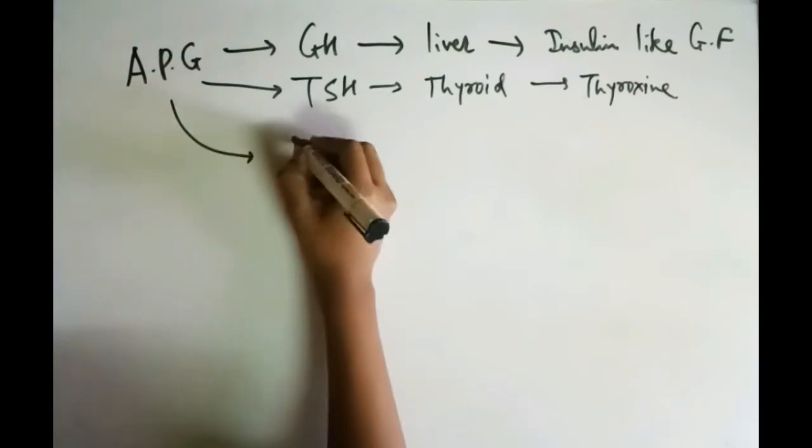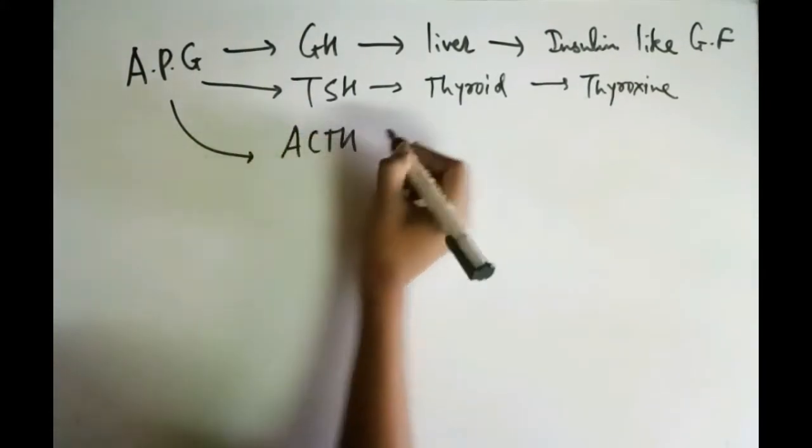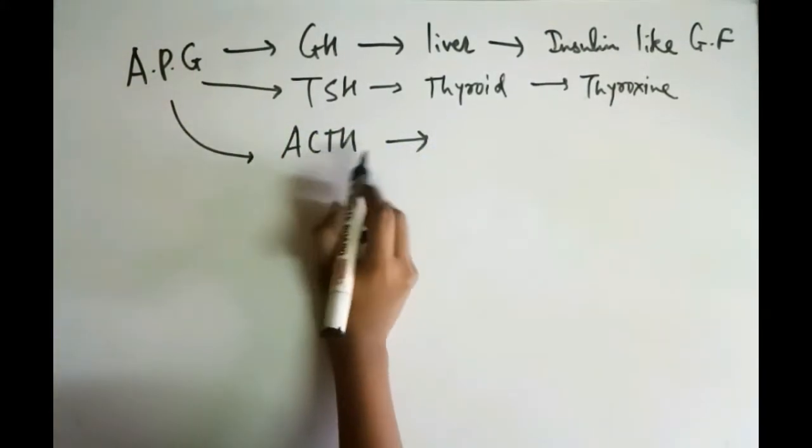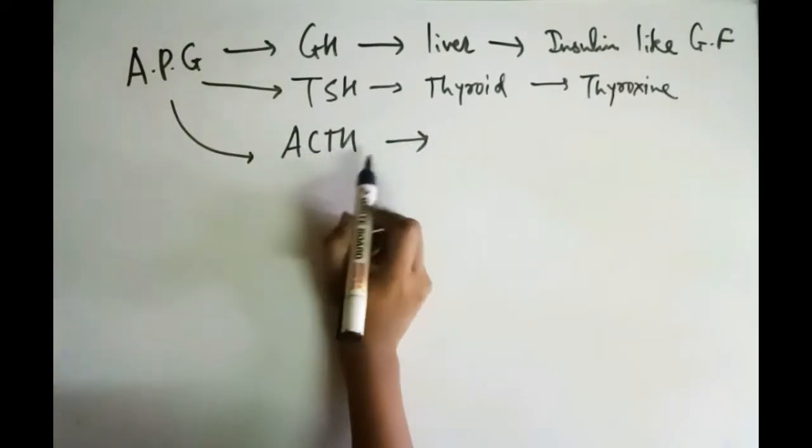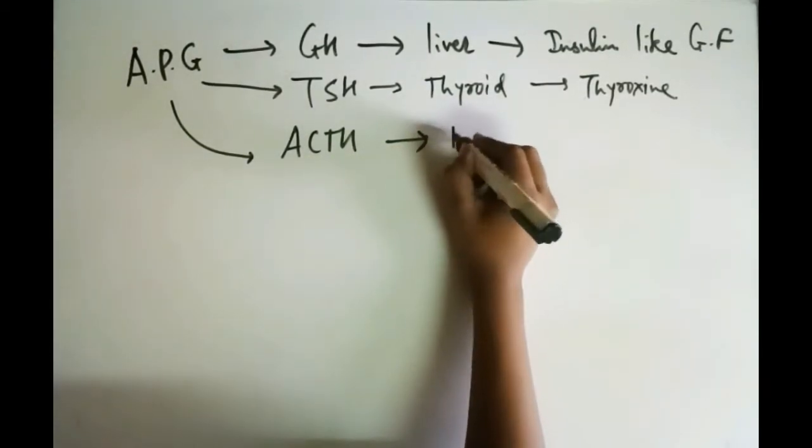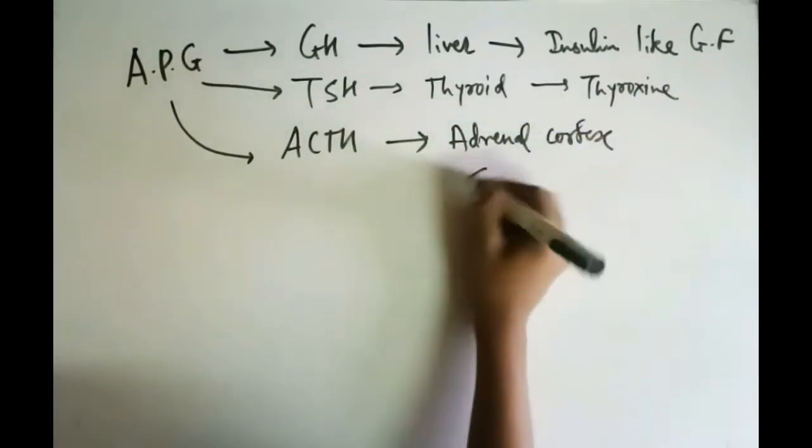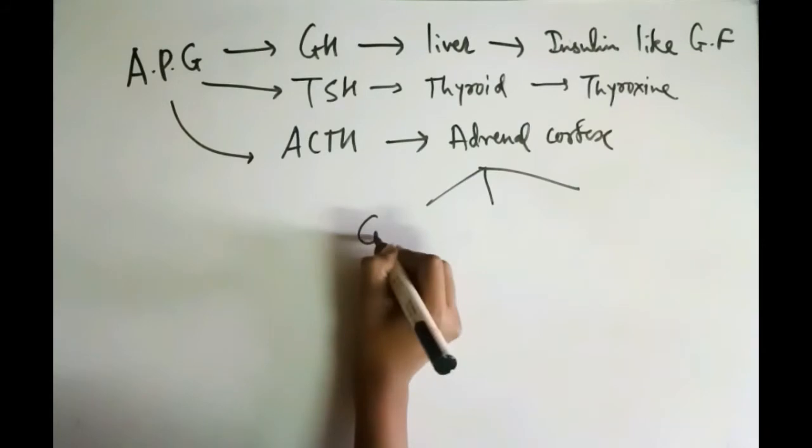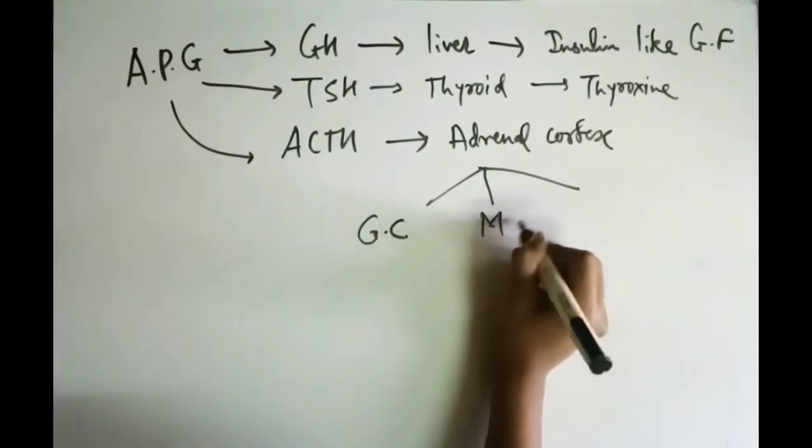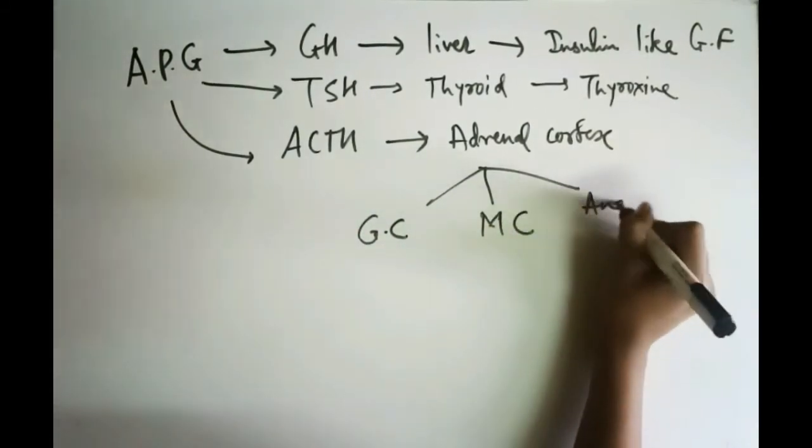The next hormone is ACTH that is adrenocorticotropic hormone which is released from adrenal cortex. It releases three types of hormones. First is glucocorticoids, then mineralocorticoids, and last is androgens.